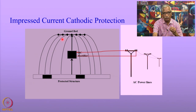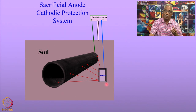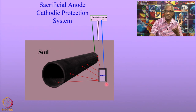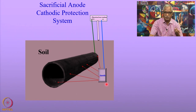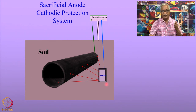We will also look at the sacrificial anode cathodic protection system. In this, we need to consider the selection of an appropriate number of anodes and the appropriate type of anodes — which could be magnesium, zinc, or aluminum. What decides the number of anodes and what decides the life of the sacrificial anode cathodic protection system are the subjects of the problem we will discuss today.